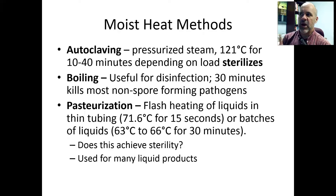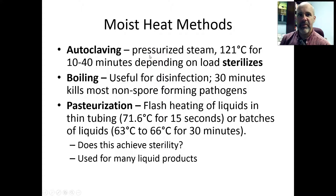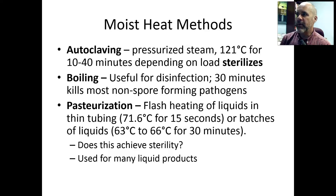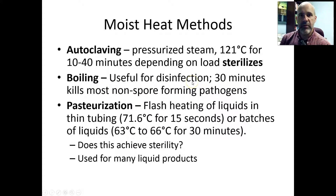What are some moist heat methods? Autoclaving — you've heard about this already in some of your virtual labs. This is steam under pressure, so it's moist heat. An autoclave generates steam kind of like a pressure cooker would, and the extra pressure allows the temperature to go up higher than it would in the open. Boiling water: if you stick something into boiling water it takes about 30 minutes to kill most non-spore-forming pathogens. It's difficult to achieve full sterilization with boiling, but it is very useful for disinfection — if you've had an infant at home you've probably used boiling water to sterilize bottle nipples.